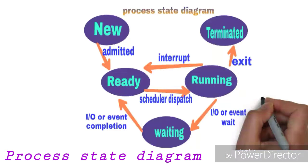A process changes its state whenever it is executed. A process is in the new state when it is about to be created. From the new state, it changes to the ready state when the operating system attaches information or a PCB to it. A process in the ready state is waiting for the CPU, and more than one process can be in the ready state at the same time.